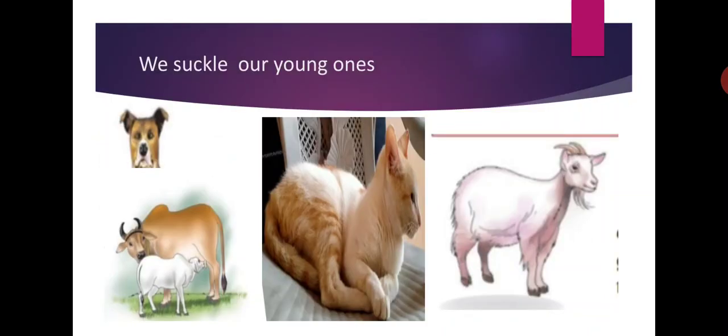The second group are young ones that suckle. Suckle means to grow up on their mother's milk. Young ones of animals like the cow, dog, goat, and rat grow up on their mother's milk. They have four legs, they have hair on their body, and they have external ears like us.